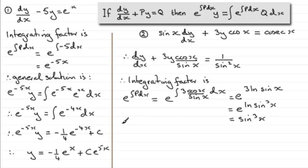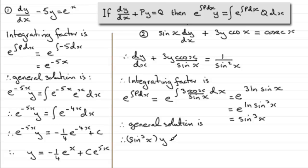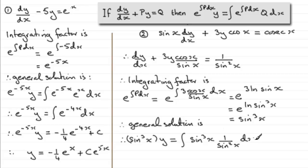Therefore, the general solution is: the integrating factor sin cubed x multiplied by y equals the integral of sin cubed x multiplied by q, which is 1 over sin squared x, all integrated with respect to x. We can cancel sin squared x into sin cubed x, leaving sin x. So we have y·sin cubed x equals the integral of sin x with respect to x.